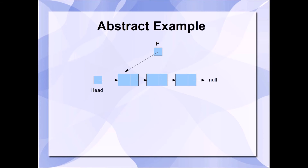So the loop works something like this: while P is not null, set P to P->next. Initially P is not null, therefore we'll set P to P->next. Since P is still not null, we'll set P to P->next again. Since P is still not null, we'll set P to P->next once more. Since P is now null, P stops being updated, the loop ends its iteration, and we are left with P containing null.